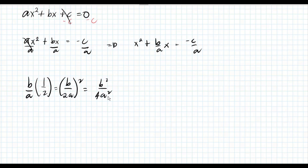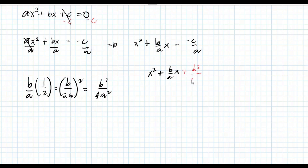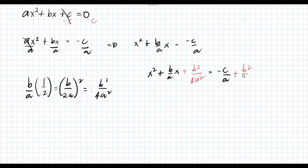Now, we add b squared over 4a squared to both sides of the equation. So the equation becomes x squared plus b over a times x plus b squared over 4a squared equals negative c over a plus b squared over 4a squared.